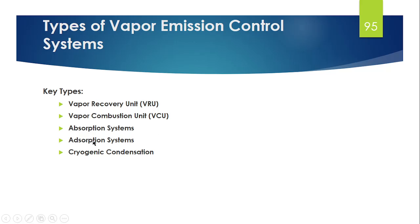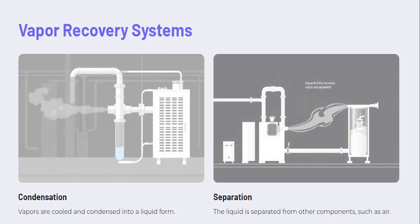There are different types of vapor emission control systems: vapor recovery system, vapor combustion unit, absorption type, adsorption type, and cryogenic condensation. In your examination, you can mention any two or three of these types, and you can also draw a diagram.